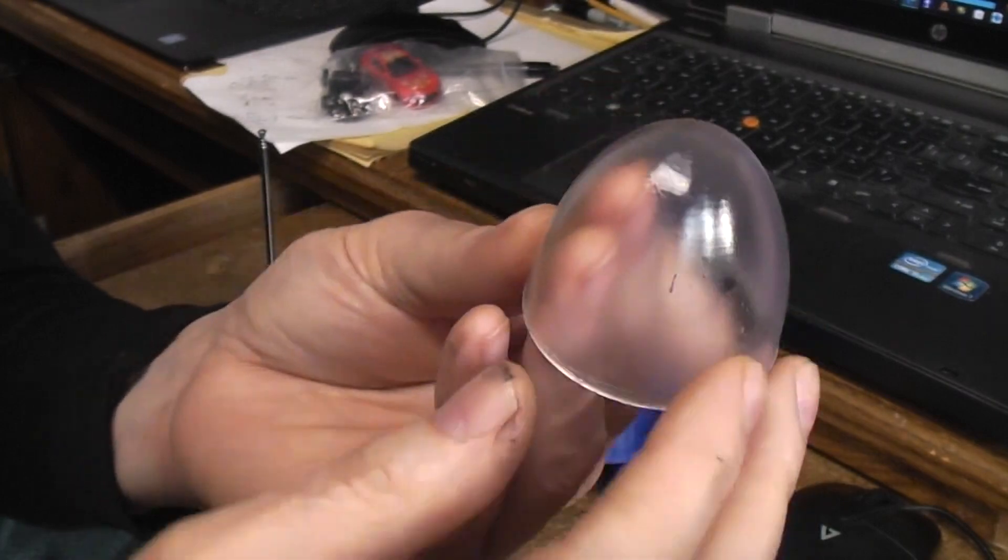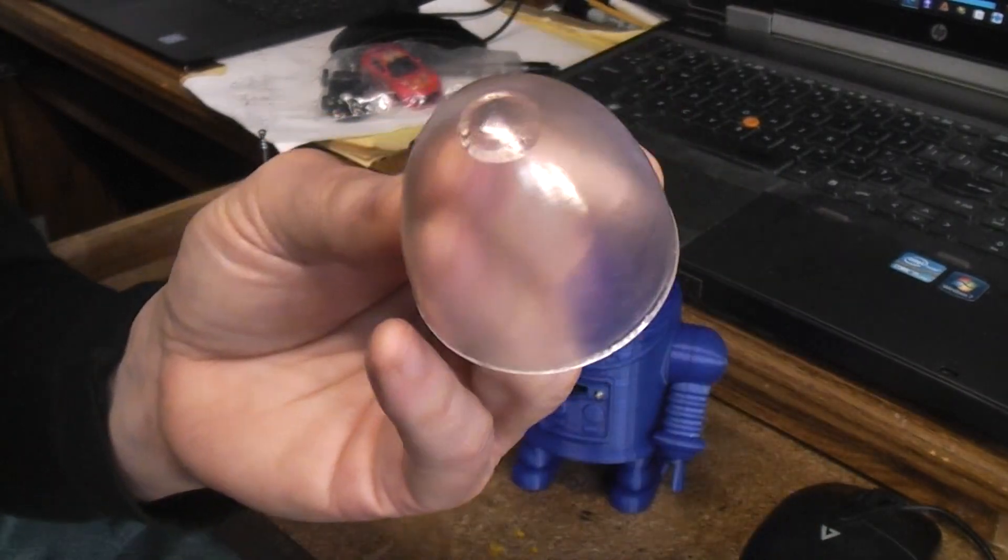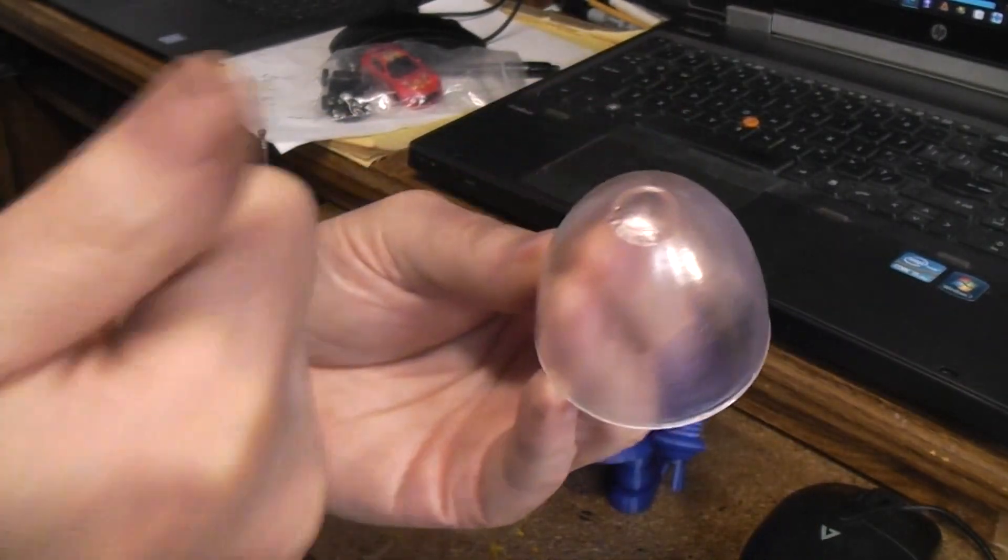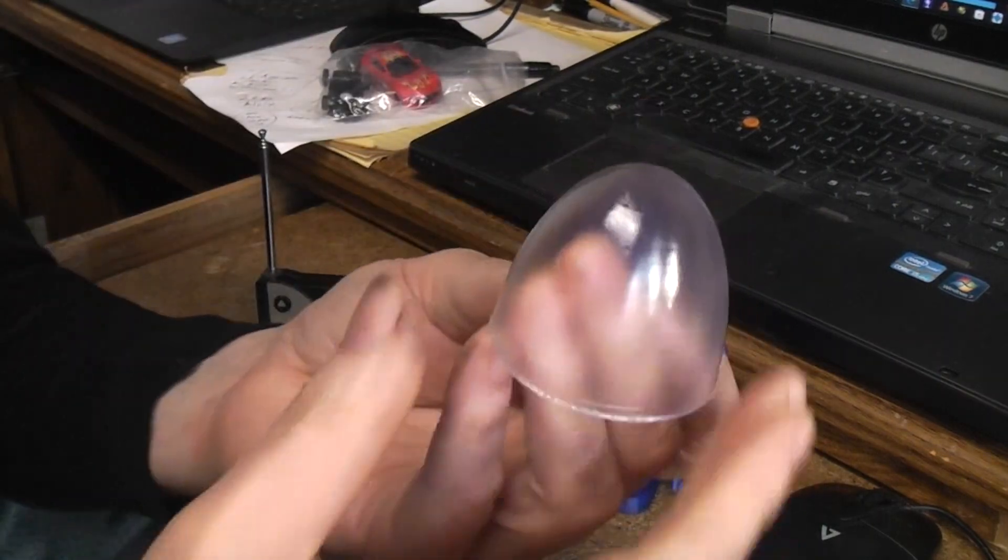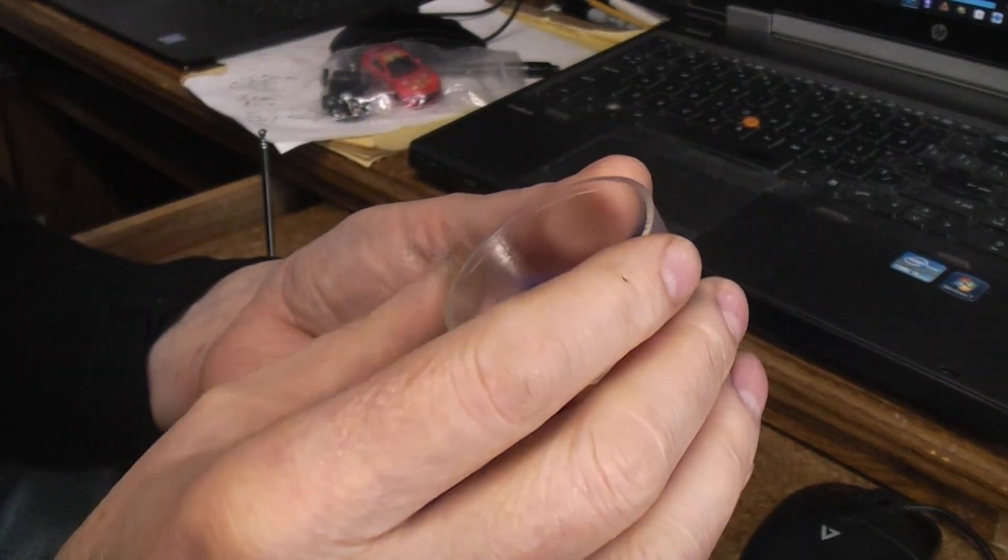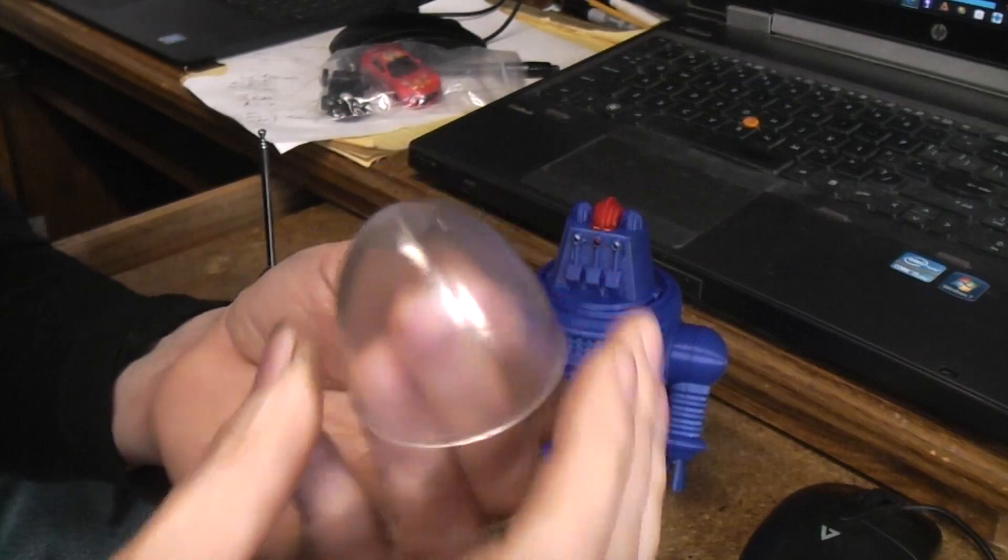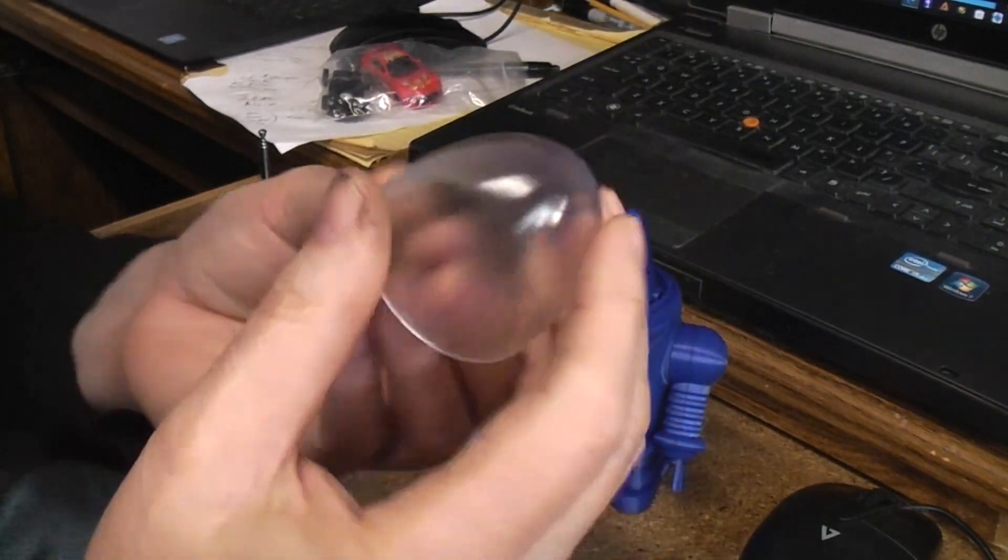I mean if a person wanted to spend the time on it, I suppose you'd sand it with super light grade paper and then give it some more clear coats and get it back clear again. But if I was going to go to that much work, I think I'd just go ahead and vacuum form one. You know what I mean.